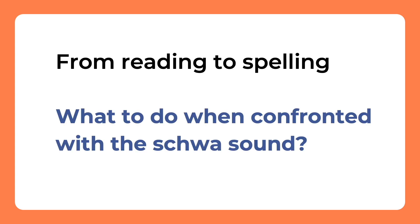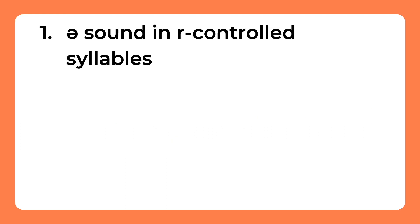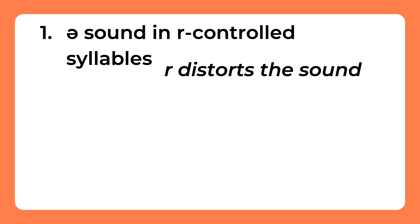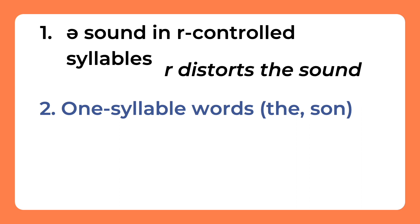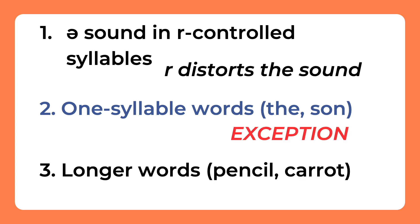What to do when confronted with the schwa sound? These are my go-to tips. Number 1: schwa sound in R-controlled syllables — just teach children about the letter R distorting the sound. Number 2: one-syllable words containing the schwa sound, like 'the' and 'sun' — introduce them as exceptions; fortunately, there aren't so many. Number 3: longer words with the schwa sound, such as 'pencil', 'carrot', 'cactus'. As the schwa is such a neutral sound, it can mimic any vowel sound, and it will naturally roll out of your students' mouths when reading these words if they are native English speakers.